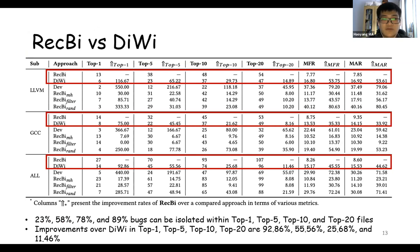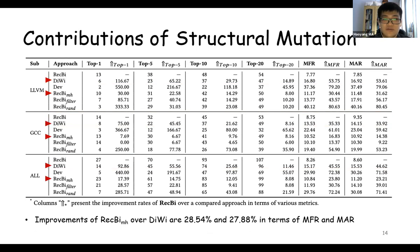Here is the comparison. From this table, we can see that Rugby performs much better than Divi. About 23%, 58%, 78%, and 89% bugs can be isolated within top 1, top 5, top 10, and top 20 files. This is great progress. Here's our contributions of structural mutation. We compare Rugby MH and Divi. The only difference between these two techniques is Rugby MH contains structural mutation strategy, but Divi does not. The improvement of Rugby MH over Divi can prove our structural mutation strategy has its own advantage, and it can help improve the efficiency of Rugby.